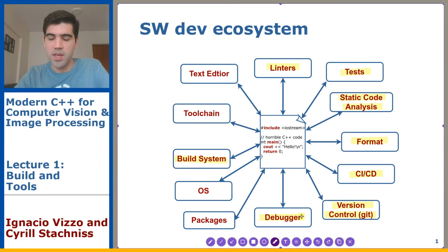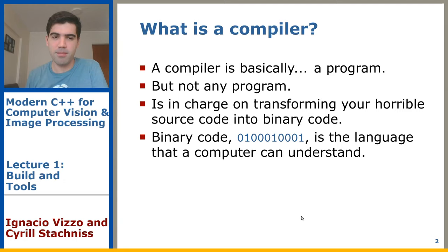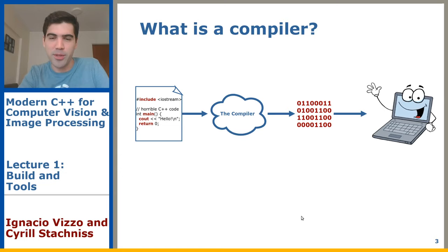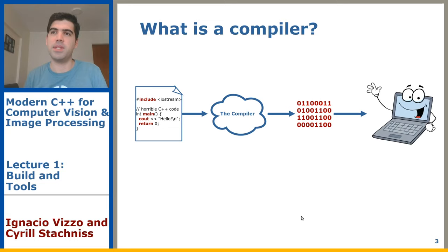Today we're going to dive deep into build systems and how the compilation process works. What is a compiler? A compiler is basically a program — it's the one that will transform your source code into binary code. Binary code is the language the computer can understand. You write source code saying what you want the computer to do, and the compiler does real black magic to turn that human-readable source code into binary code that the CPU is happy to execute.